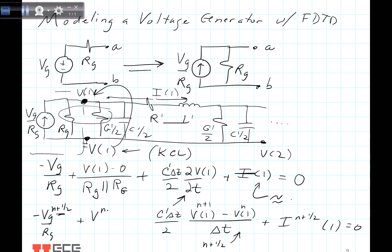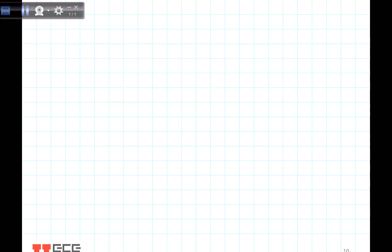We also need V at n plus one-half at location 1, divided by Rg in parallel with the resistance from big G. That's a problem because we don't have voltages at half time steps. So we average: we take V at (n+1) plus V at n divided by one-half to get that voltage. That averaging is the basis of the equation, and now we solve for the n plus 1 time step by substituting everything in and solving for V at n plus 1.